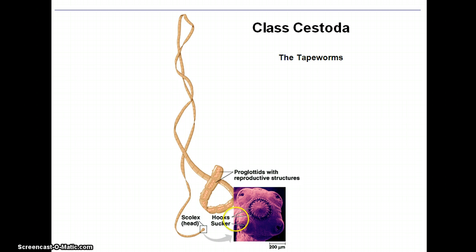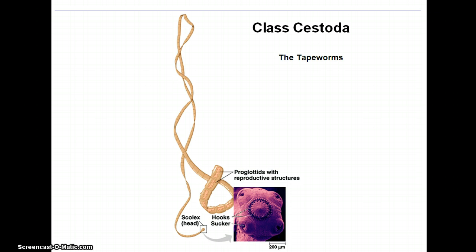They have a scolex, and then they produce all these little body sections called proglottids. Each one of these sections has repetition of primarily just reproductive system — these are basically just reproductive machines. Each proglottid contains testes and ovary and other aspects of the female and male reproductive systems. The immature proglottids are produced right behind the scolex at what's called the neck region — though it's not really a neck because there isn't really cephalization.